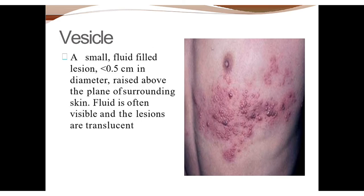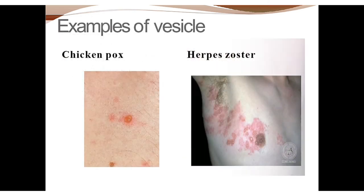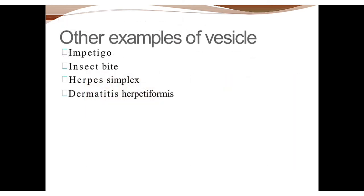Next is vesicle. A vesicle is a small fluid-filled raised lesion, with size less than 0.5 centimeter, raised above the plane of the surrounding skin. The fluid is often visible and the lesion is translucent. Examples include chickenpox and herpes zoster — they are raised above the surrounding skin and contain translucent fluid. Other examples are impetigo, insect bites, herpes simplex, and dermatitis herpetiformis.